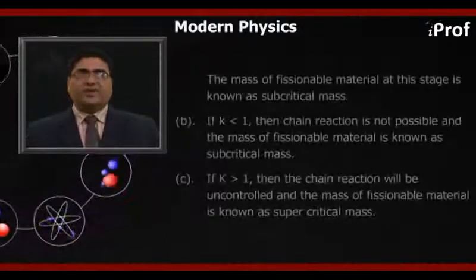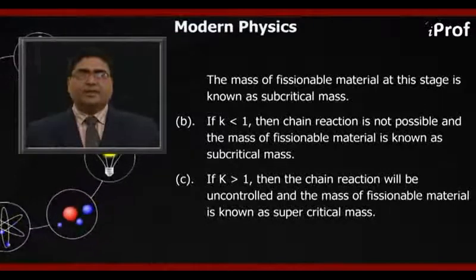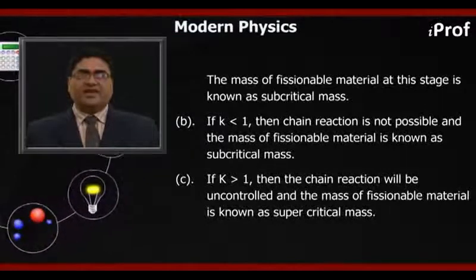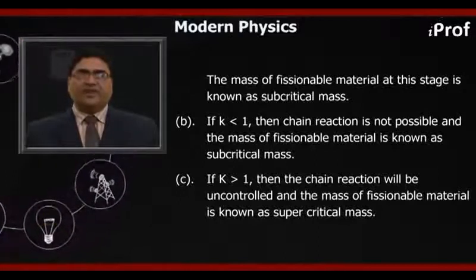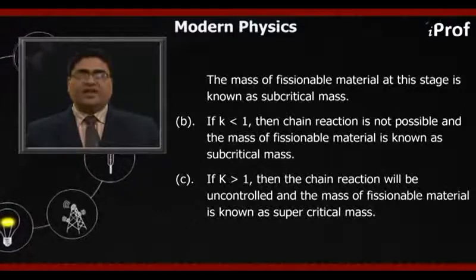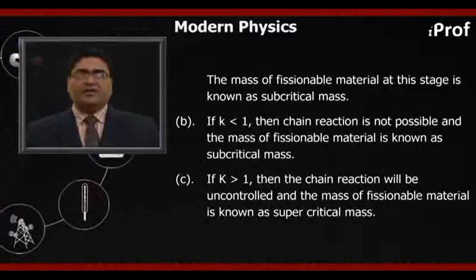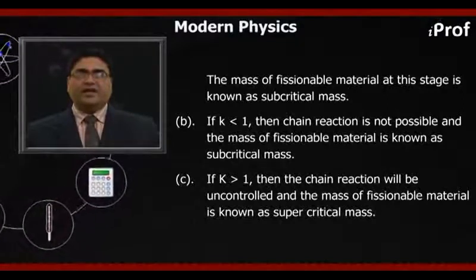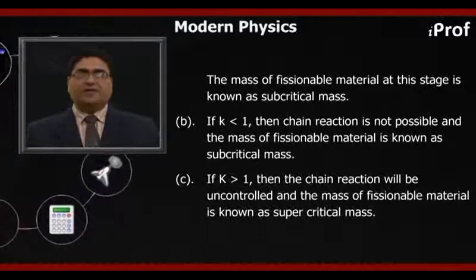If K equals 1, then the self-sustained chain reaction will be controlled, and the mass of fissile material at this stage is known as critical mass. If K is less than 1, then chain reaction is not possible and the mass of fissile material is known as subcritical mass. If K is more than 1, then the chain reaction will be uncontrolled and the mass of fissile material is known as supercritical mass.